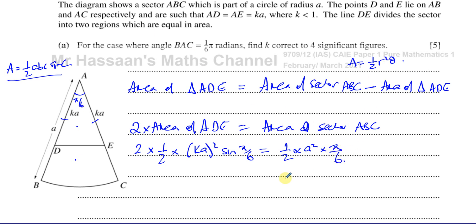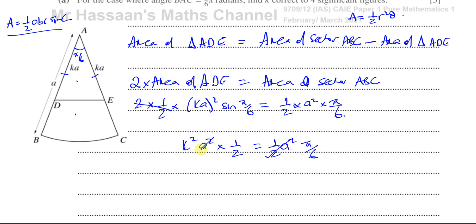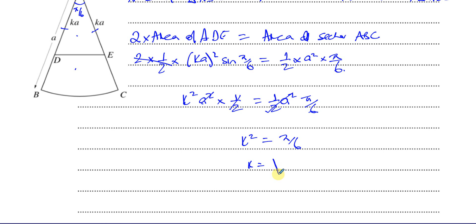Now the halves cancel out, leaving K squared A squared. Since sine of π/6 is ½, we have K squared A squared times ½ equals ½ times A squared times π/6. The ½ and A squared cancel on both sides, leaving K squared equals π/6. Therefore K equals the square root of π/6.